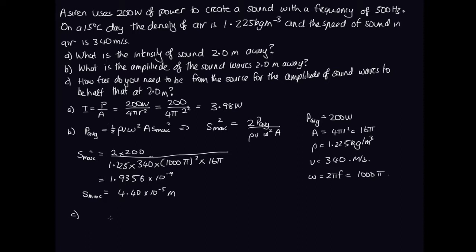Part C asks: how far do you need to be from the source for the amplitude to be half that at 2 meters? We want the amplitude at distance d to equal half the amplitude at 2 meters. Since our formula uses amplitude squared, we write: s_d² = ¼ · s_2². We now have an expression for what the amplitude squared is, so we can substitute in for both sides.